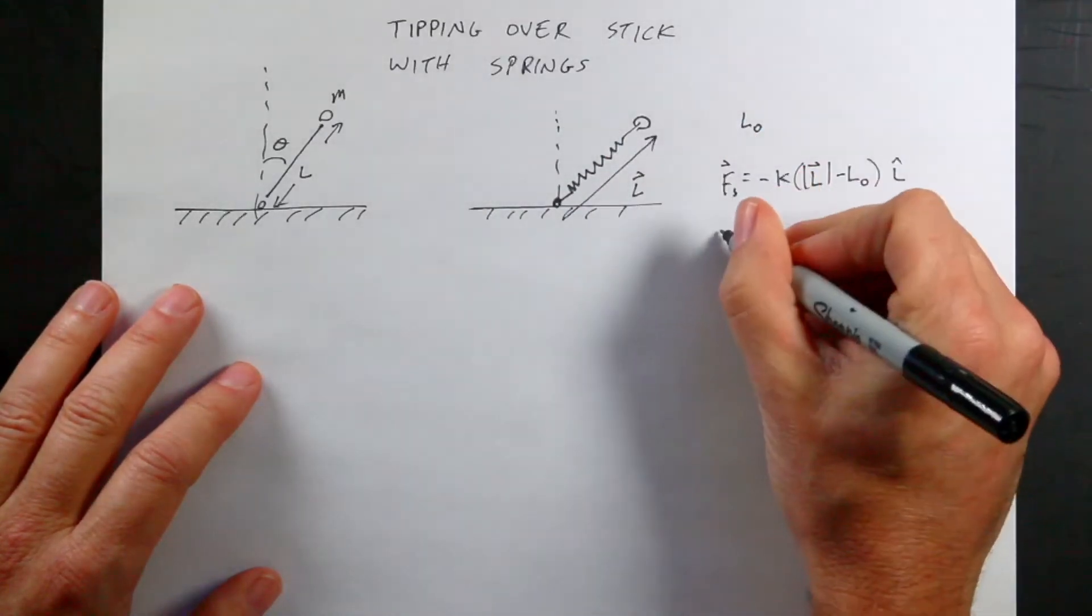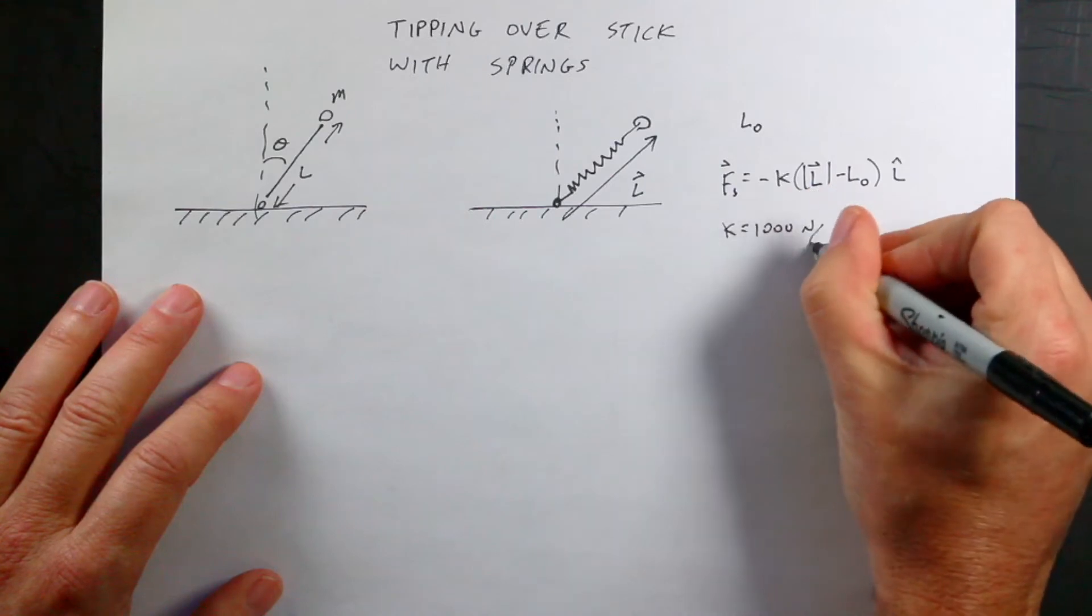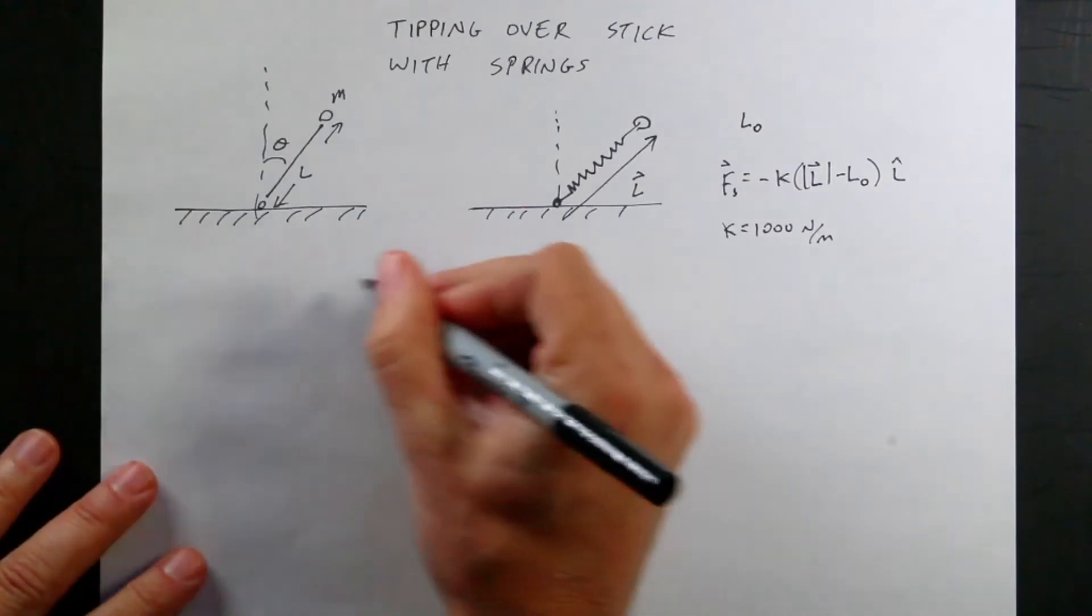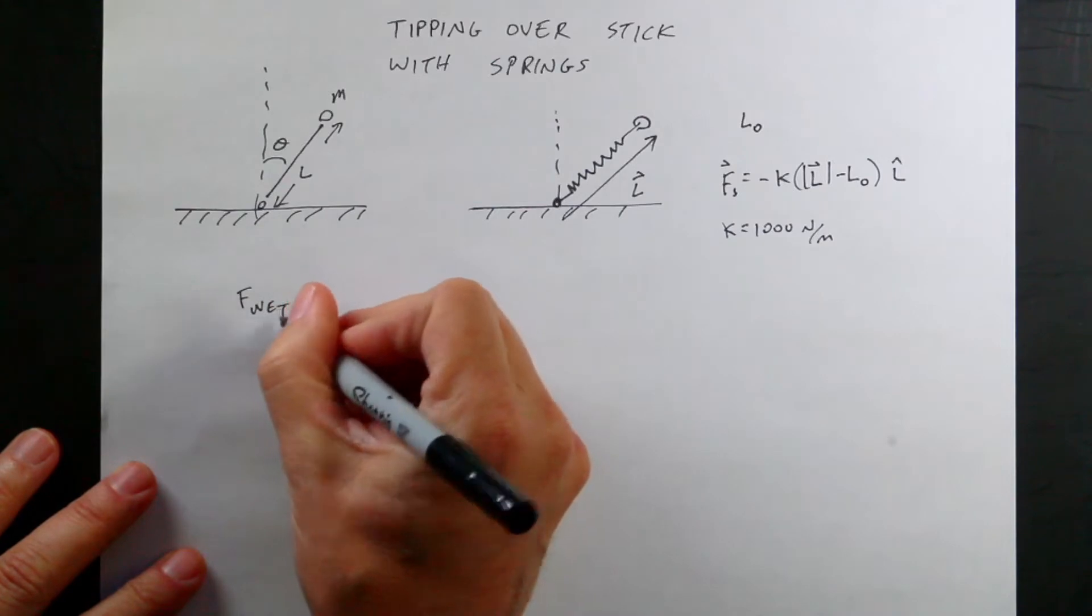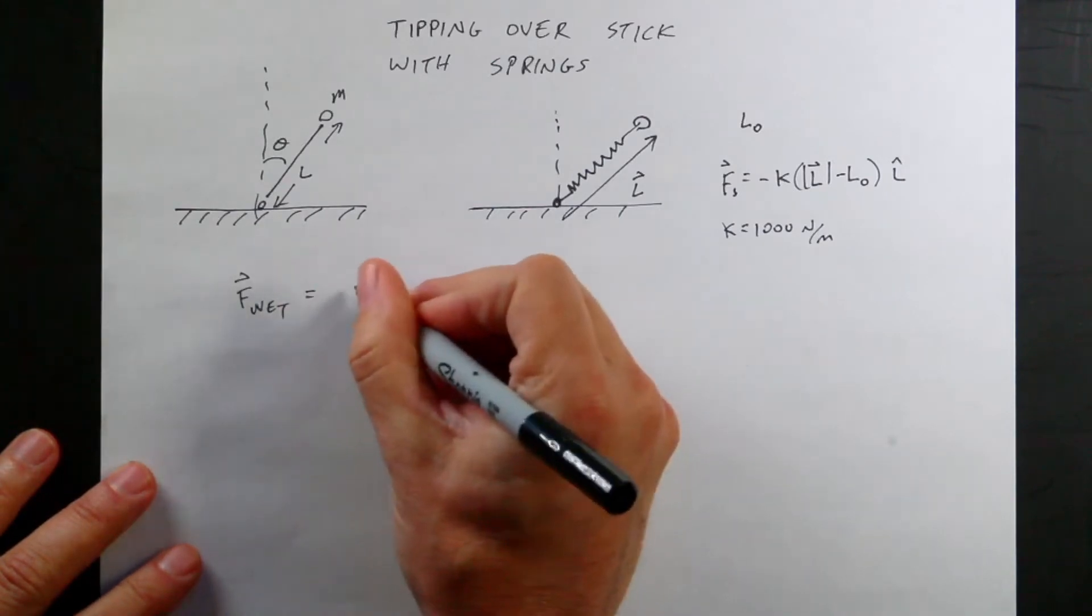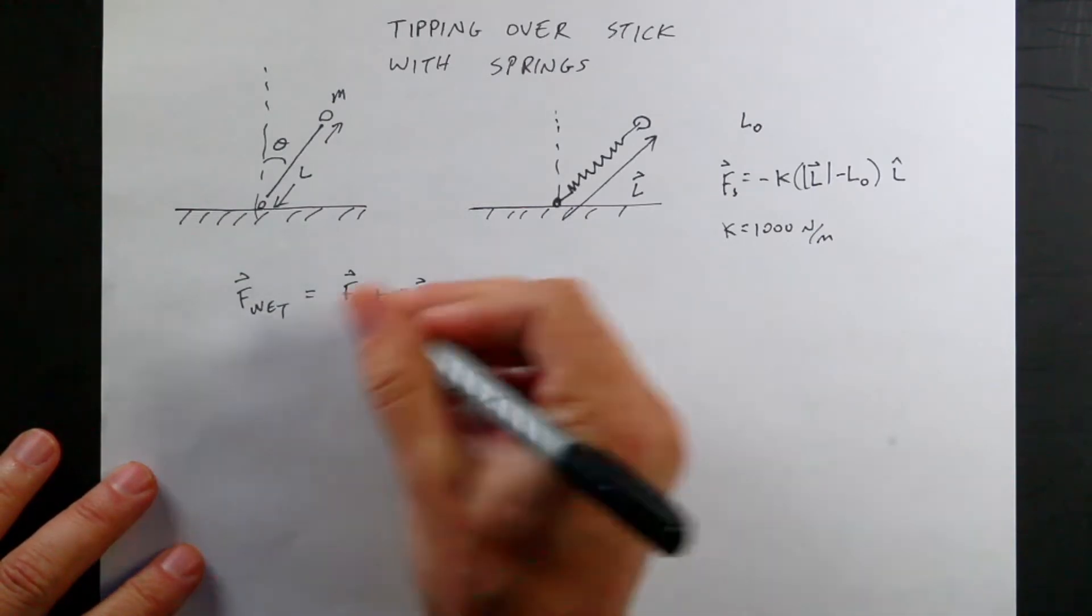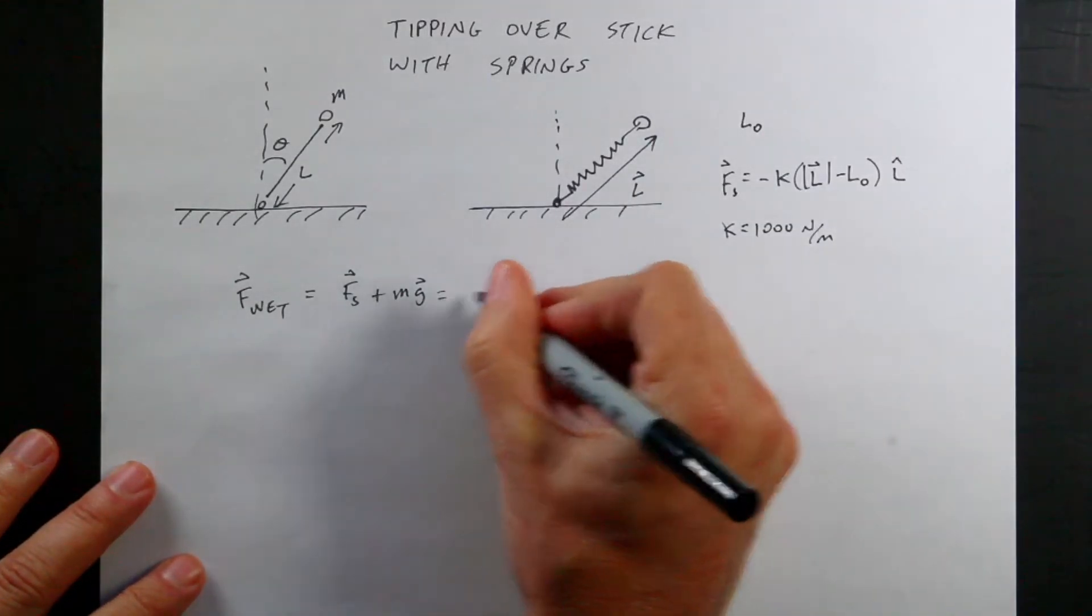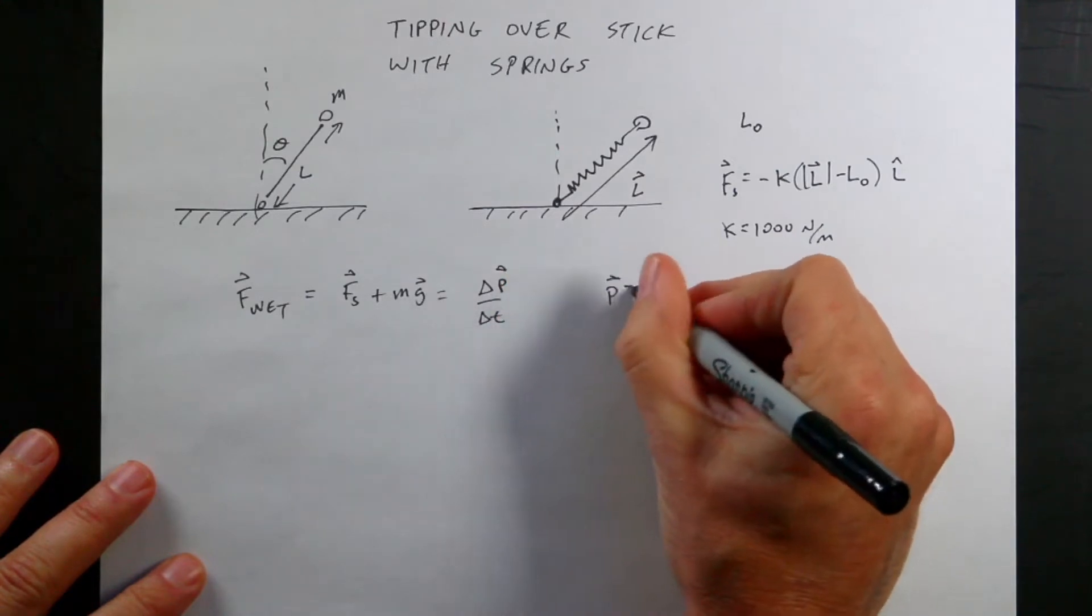So that's all I need to do. I need to pick a value for K. Let's say K is 1,000 newtons per meter. And now I'm going to say F_net is going to be F_spring, which I just calculated, plus M times G, where G is the gravitational field vector. That's the total force. And that is going to be equal to delta P over delta T, where P is MV.